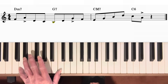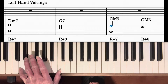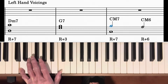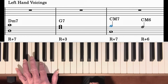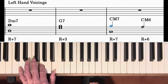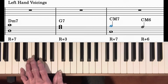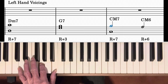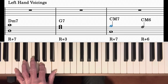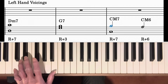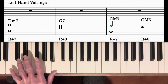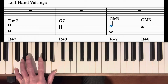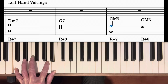For D minor 7 I'm going to play the root and the seventh — that's D and C. When I go to G7 I'm going to play the root and third — G and B. Notice how the seventh of D minor 7, C, drops a step to the third of G7 — this gives what we call smooth voice leading. The third of G7, B, is then repeated as the major 7th of C major 7, so for C major 7 we've got the root C and major 7th, and then to create some movement I'm going to change the major 7th halfway through the bar to the 6th.